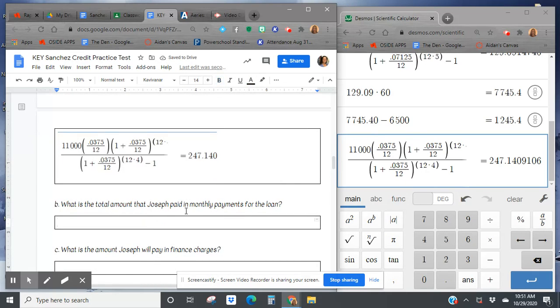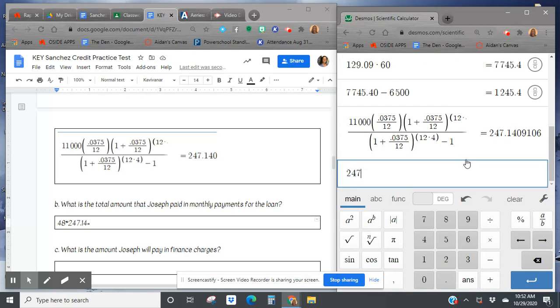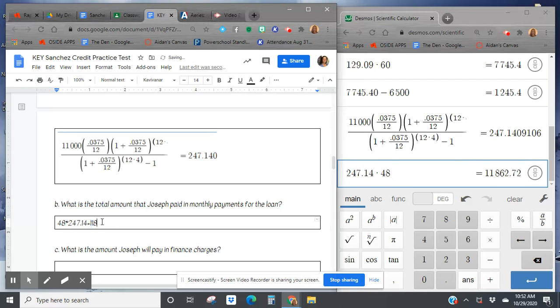What did he pay in monthly payments for the loan? So four years times 12 months, that's 48 months, times that monthly payment of $247.14. $247.14 times 48 months equals $11,862.72.